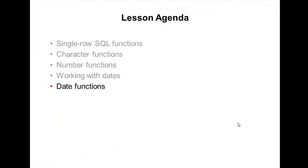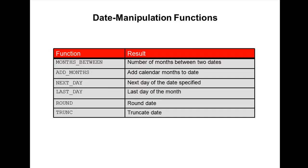Now I'm going to explain the date functions in Oracle. There is MONTHS_BETWEEN — it finds the number of months between date1 and date2. The result can be positive or negative: if date1 is later than date2, the result is positive; if date1 is earlier than date2, the result is negative. It has two arguments: date1 and date2.